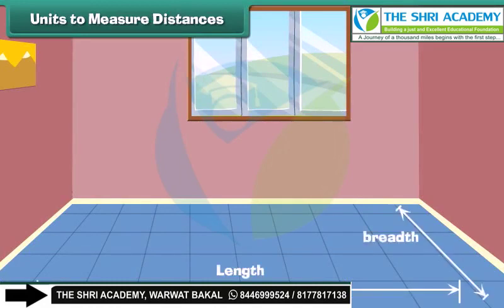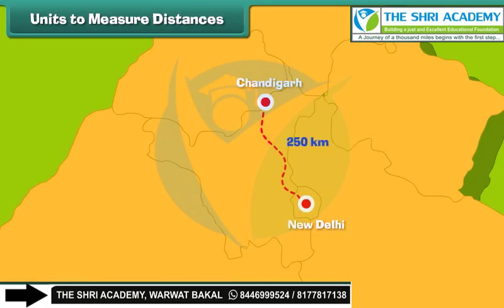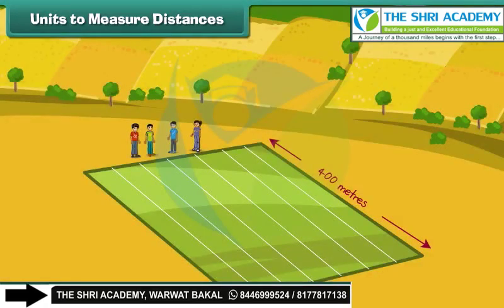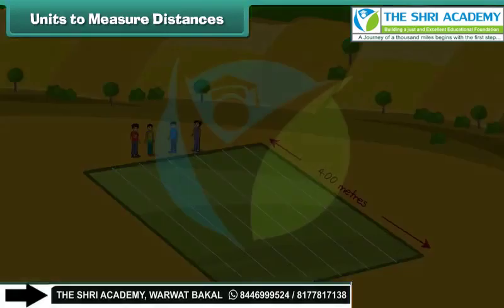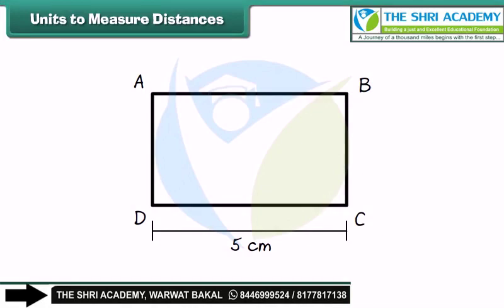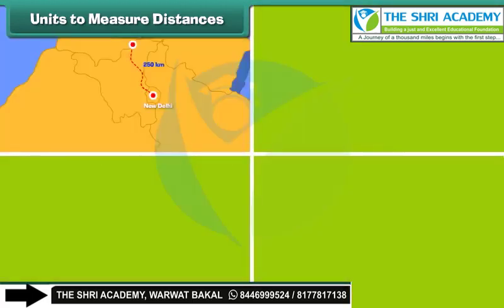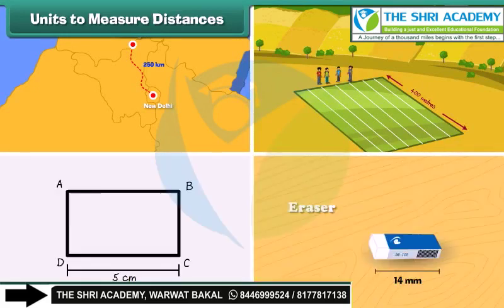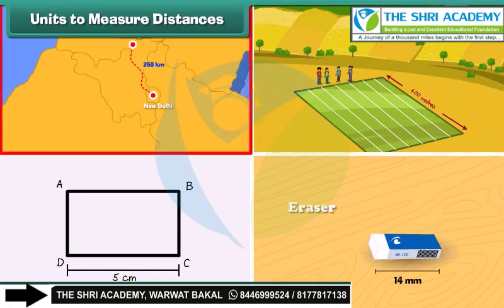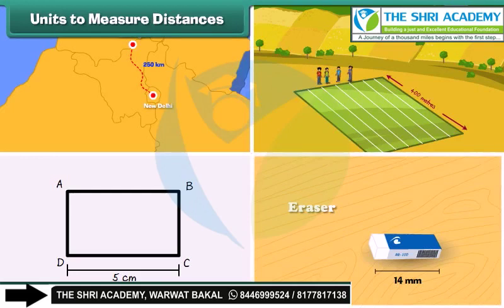Length, breadth, and height are words used to express distance. The distance between New Delhi and Chandigarh is 250 kilometers. Many students participated in a 400 meters race. The length of rectangle ABCD is 5 centimeters. The length of the eraser is 14 millimeters. Kilometer, meter, centimeter, and millimeter are the units used for measuring distances. Among these, kilometer is the biggest unit for measuring long distances, while millimeter is the smallest unit for measuring very small lengths. The standard unit of distance is meters.